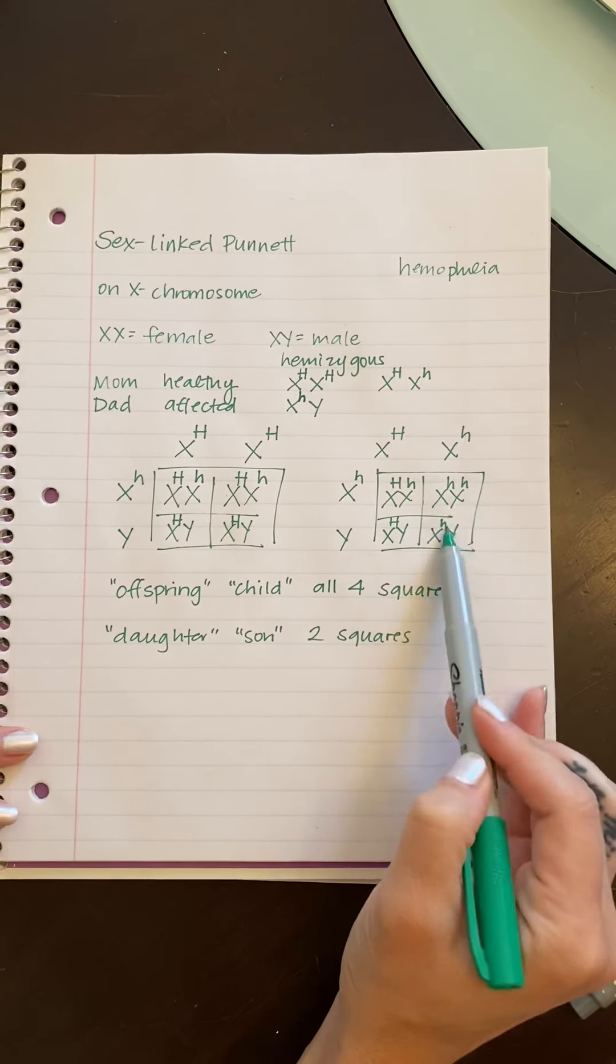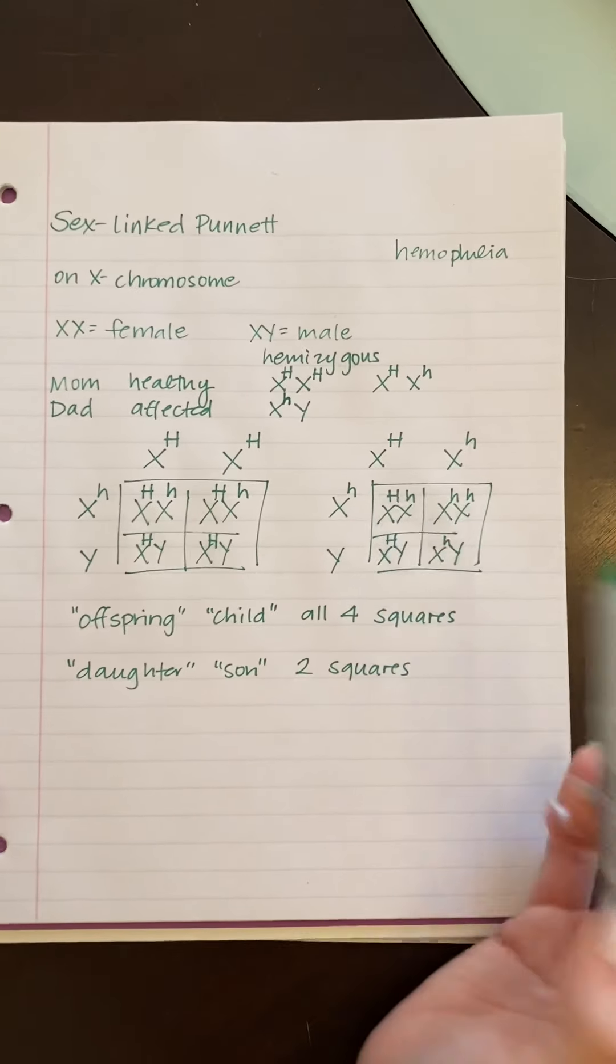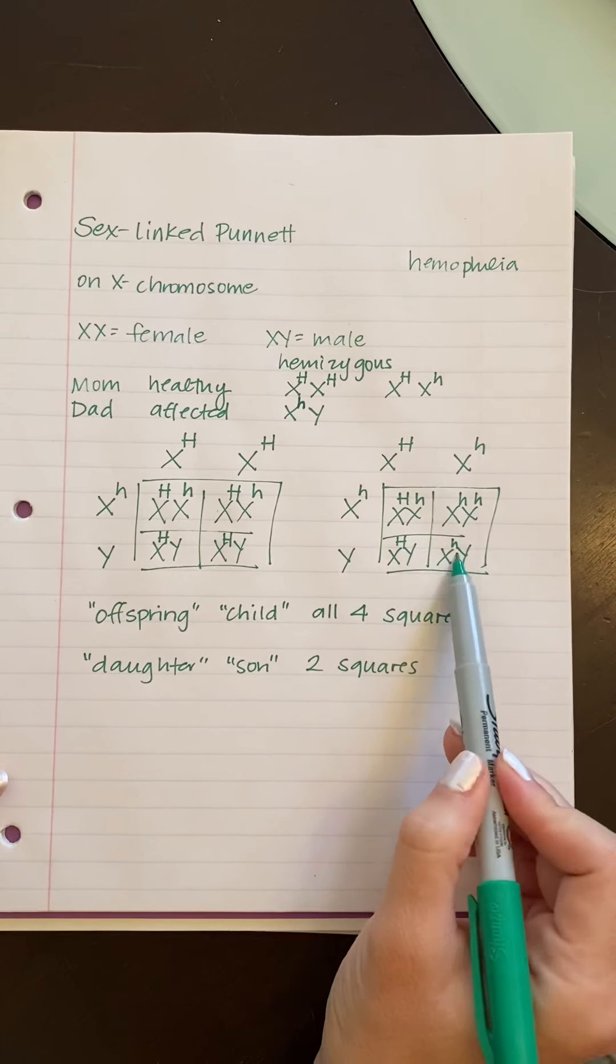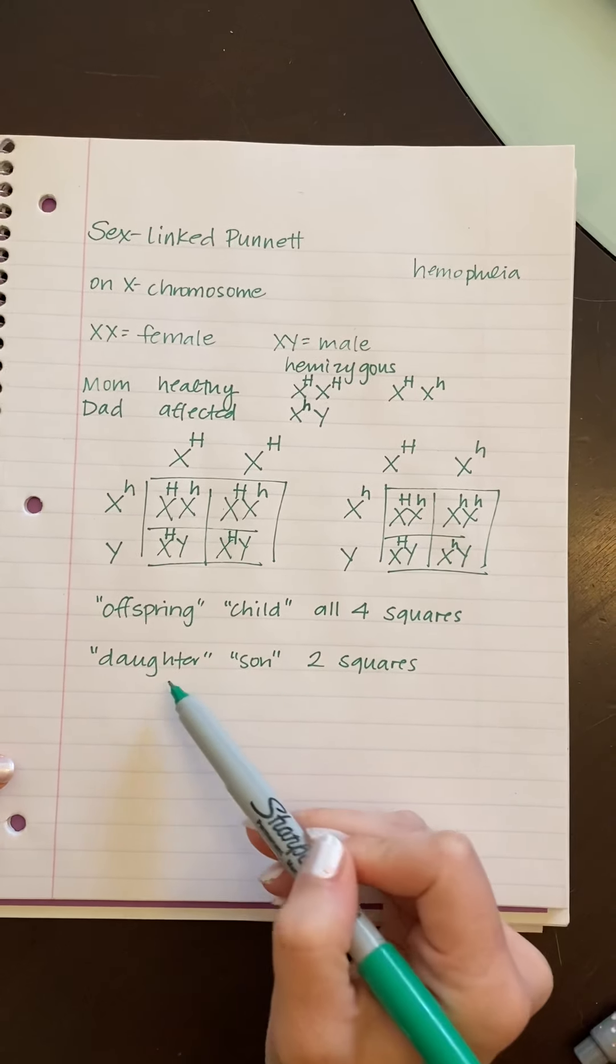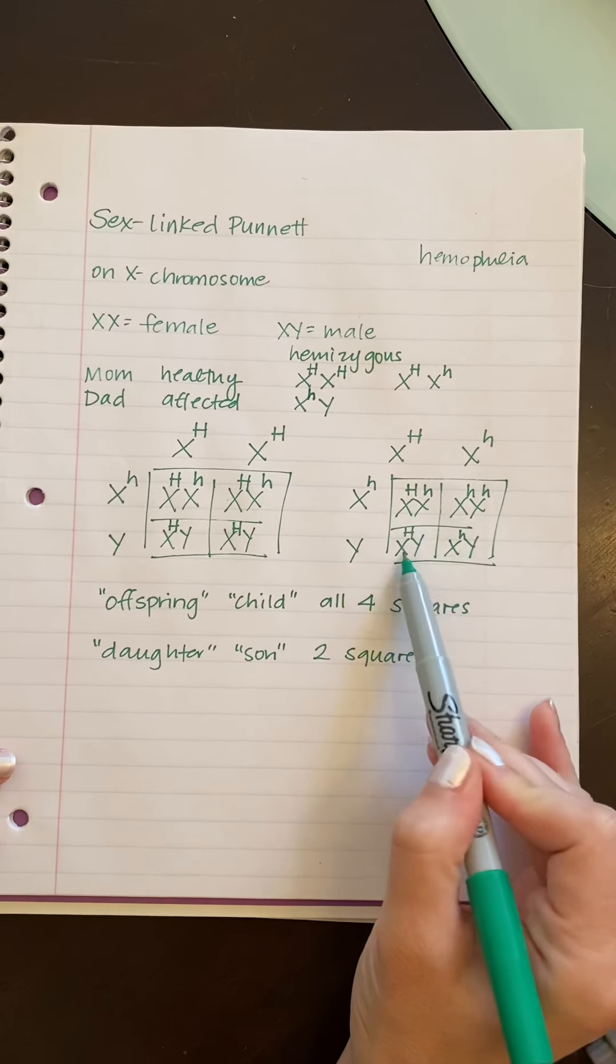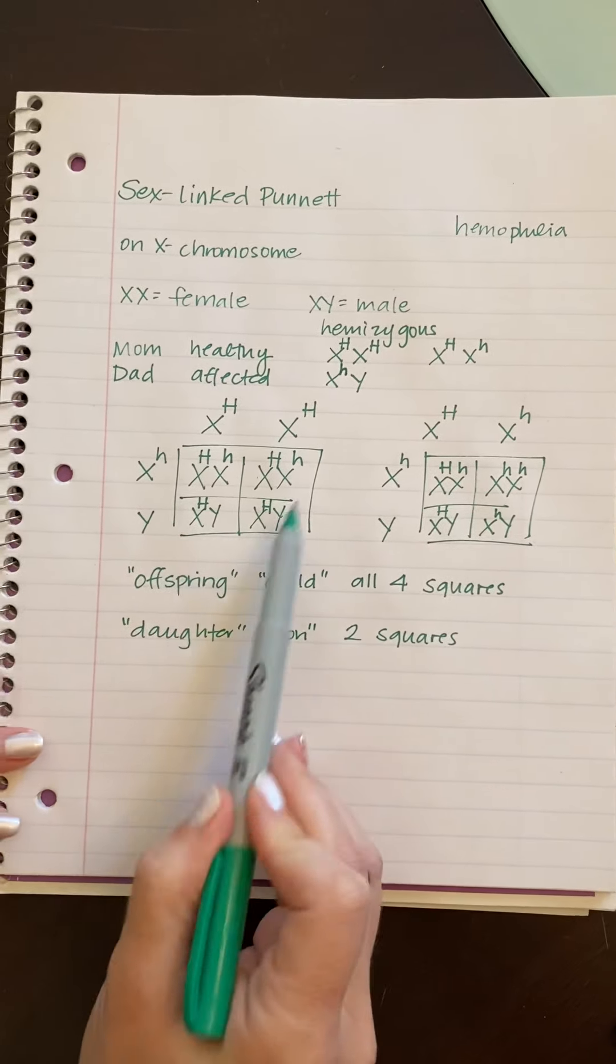In this case, they have two out of four, which is 50% having this disease. Same thing. If you ask about the daughter or the son, it would be one out of two, one out of two.